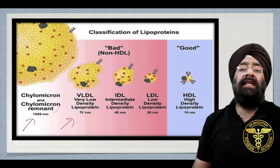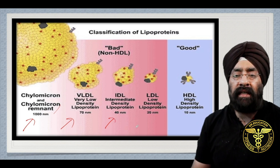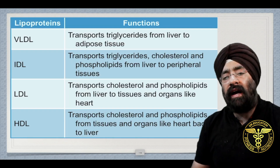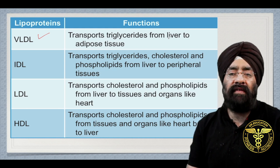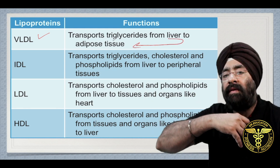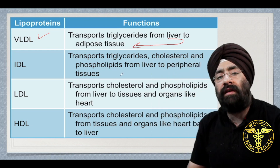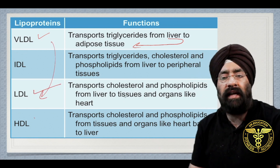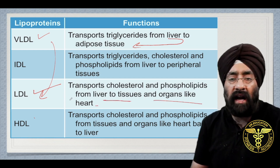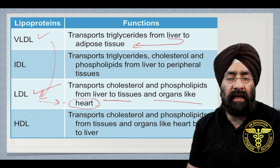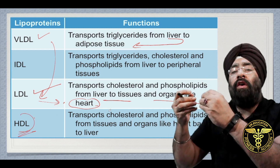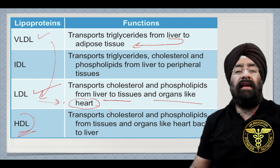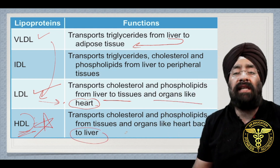Then VLDL is very low-density lipoprotein. IDL is intermediate-density lipoprotein. LDL is bad cholesterol — low-density lipoprotein. HDL is the good cholesterol. LDL takes triglycerides and cholesterol from the liver to the tissues. HDL takes cholesterol from the tissues back to the liver for breakdown. So HDL is good, and I will tell you more about HDL.